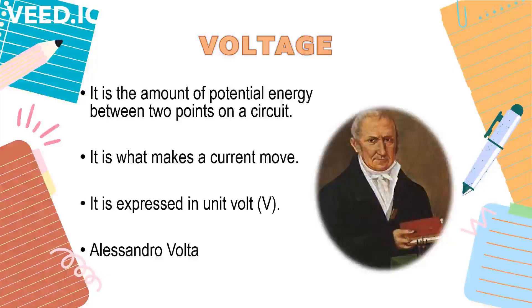Batteries and generators are the primary sources of voltage in a circuit. Take note that voltage does not go anywhere. It only drives the charges to move.